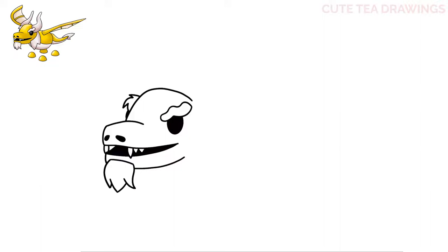Next let's add the horns. Move up above the right eye and draw a curve down, then curve it up to the right. Now move down next to the eye and draw another large curve up, then bring it up on both sides and angle it up to the right and back around. Erase the extra head line inside.